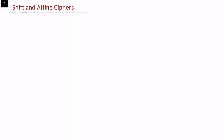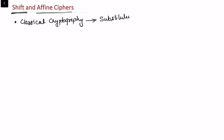In this video I'll be talking about shift and affine ciphers. These are the cipher techniques used in classical cryptography, and these are techniques used for the substitution cipher, because we are going to substitute the text — one alphabet instead of another alphabet. Let's look at what the shift cipher is first.